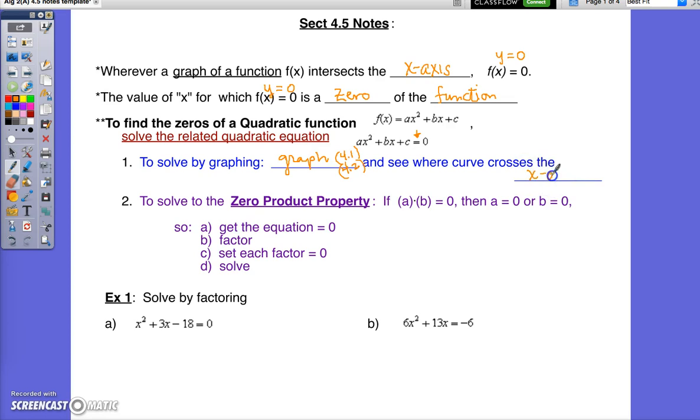But today's topic is going to be to solve using the zero product property that says, if I have factors equal to 0, then one of the factors equals 0, or the other factor equals 0. So to solve by the zero product property, get the equation set equal to 0. It must say equals 0. Then factor with your Section 4.4 factoring skills. When you're done factoring, we will set each factor equal to 0, and we will finish our solving.